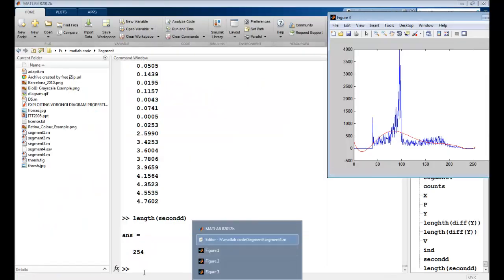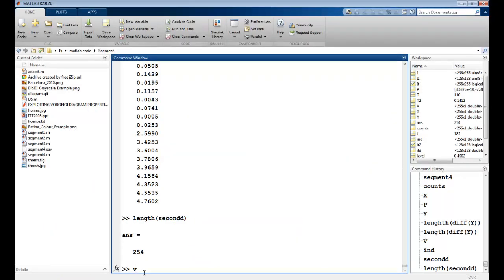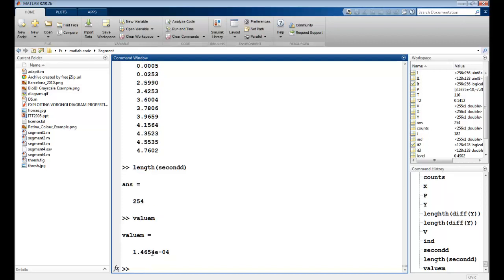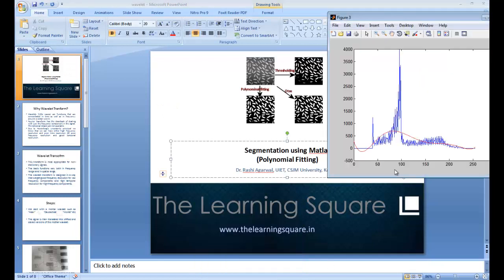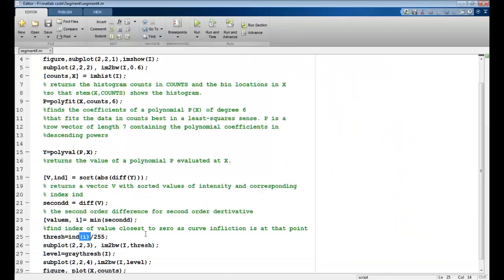So we can just verify. Value m, it seems to be pretty close to 0 and my index is 182. So approximately at a point of 182, I'm getting a minima here, which seems pretty reasonable here. So the value at this point should be taken as the threshold.